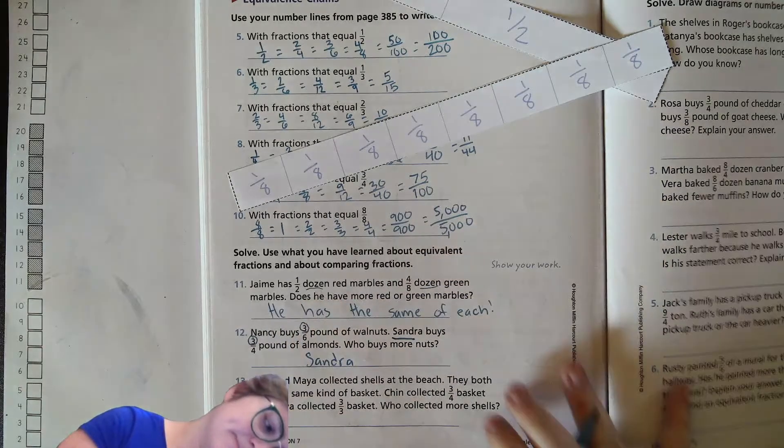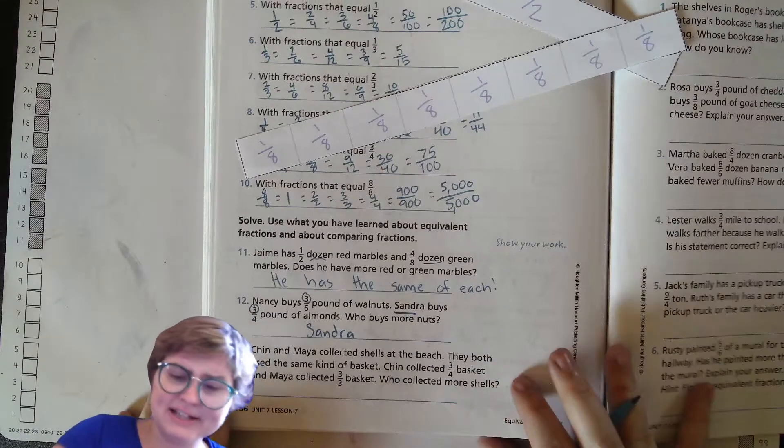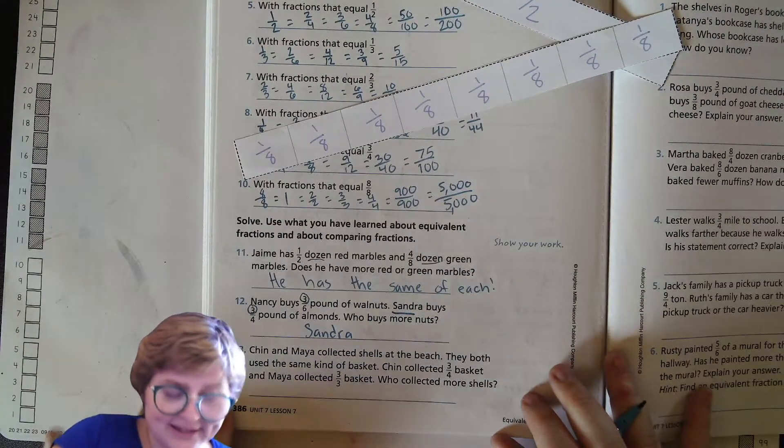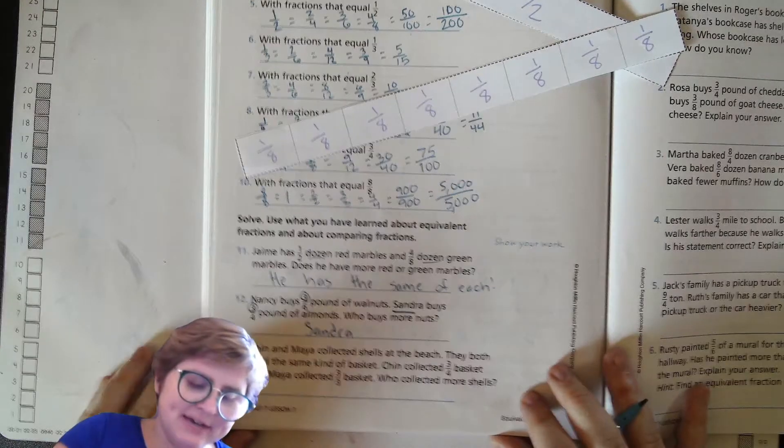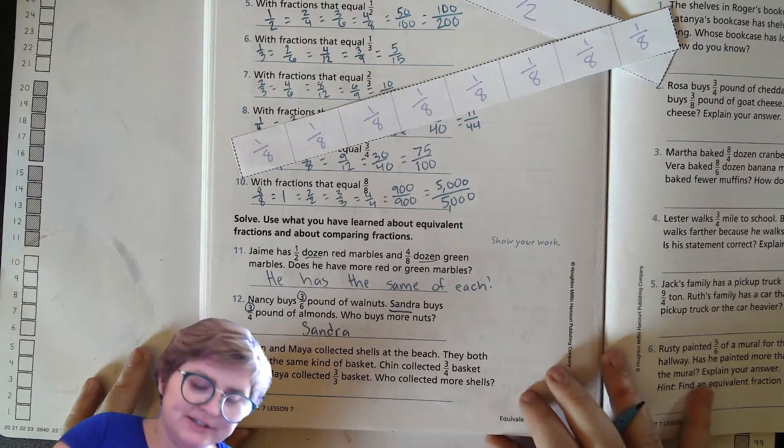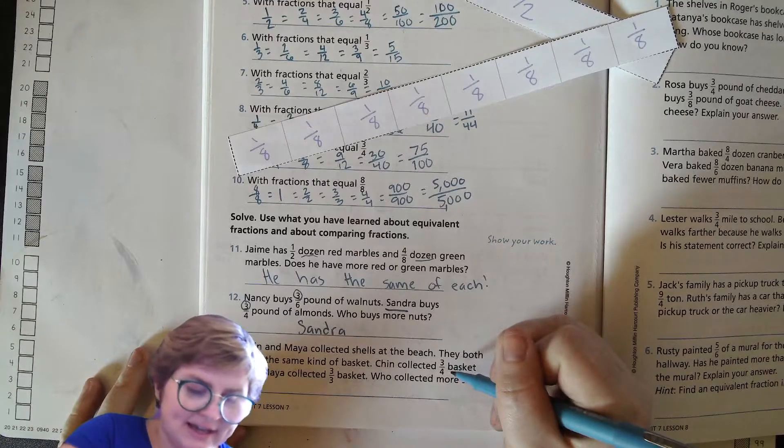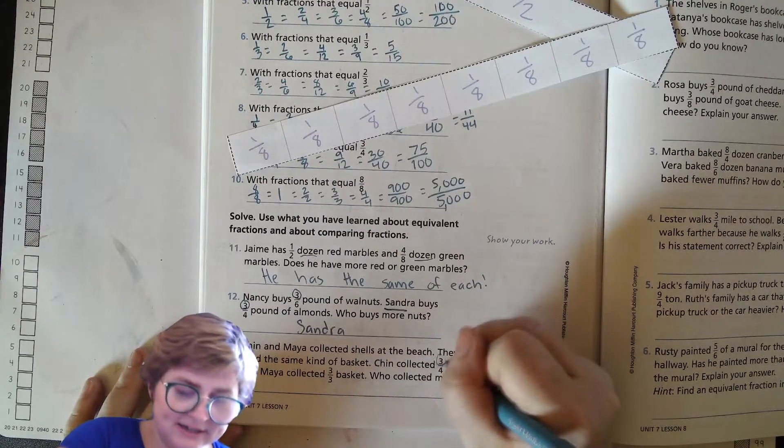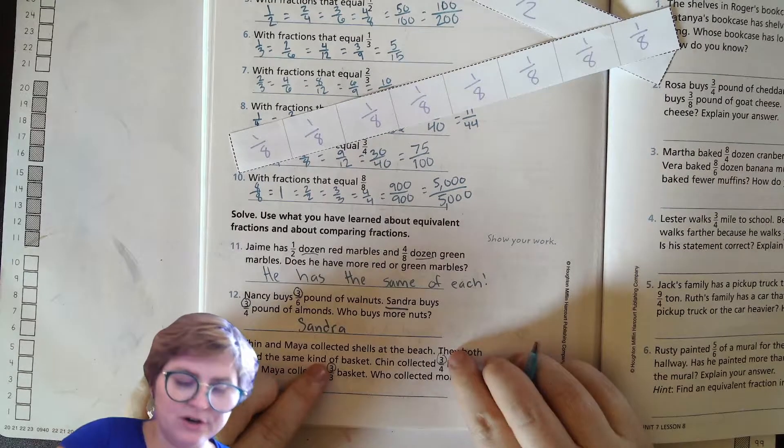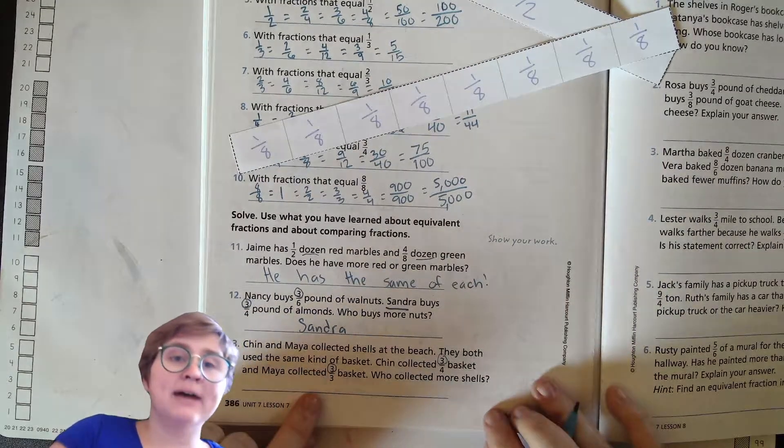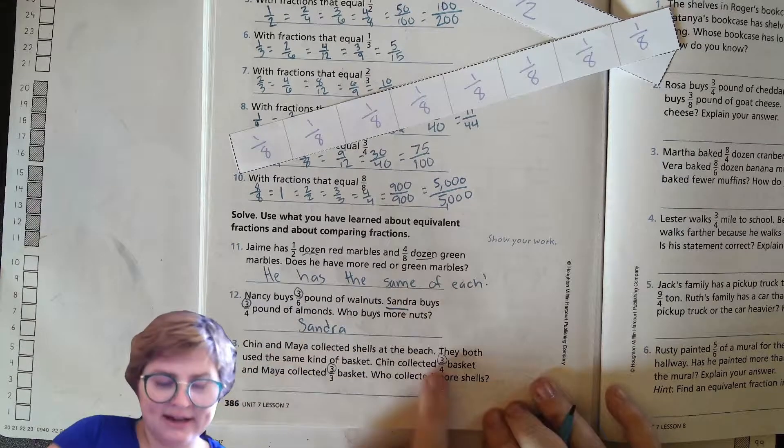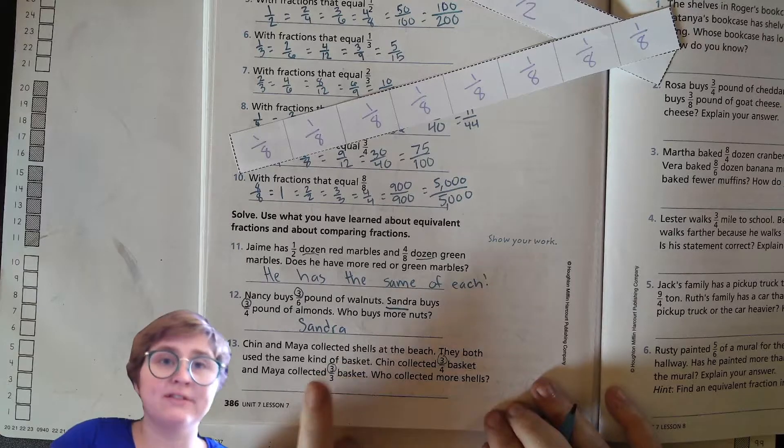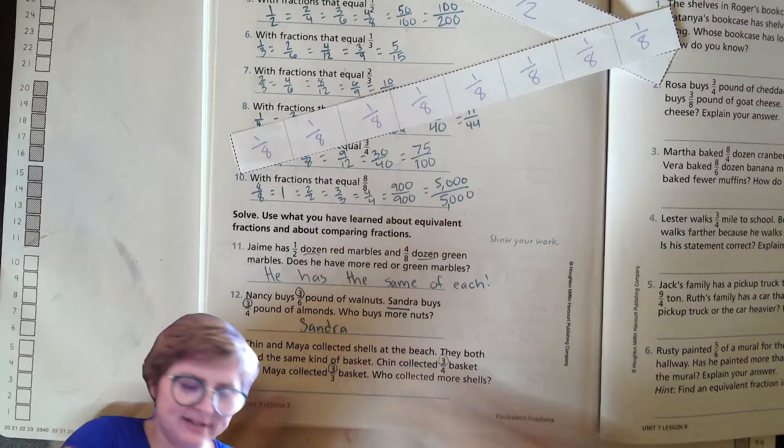Okay, last one here. Chin and Maya collected shells at the beach. They both use the same kind of basket. Chin collected three-fourths basket and Maya collected three-thirds basket. So here, once again, they have the same numerator. Also, you'll notice Maya did the whole basket and Chin did not do the whole basket, which means what's more? If they have the same size basket, Maya did more.